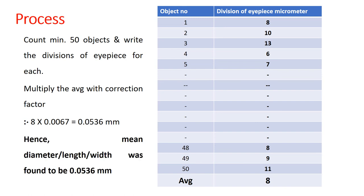In the result, you write: the mean diameter (or length or width) of the given sample was found to be the calculated value. This is how we proceed for the determination of mean diameter of starch or the determination of length or width of fibers or calcium oxalate crystals — the process known as micrometry.